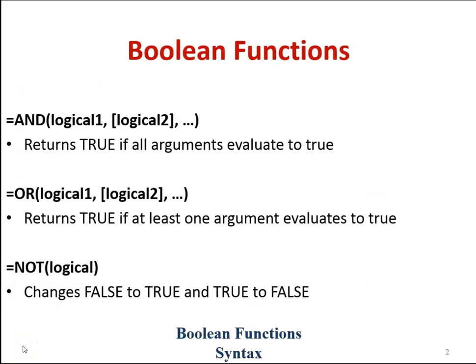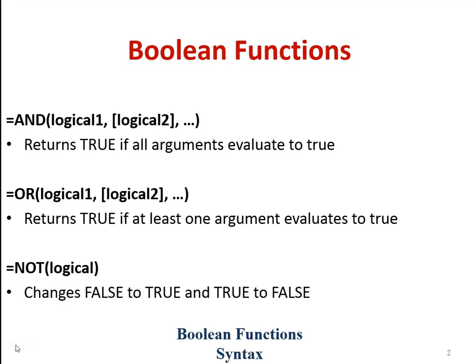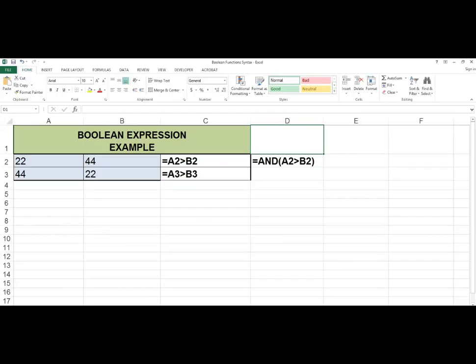Boolean functions also display or return the boolean value true or false. In this class we will learn the AND boolean function, the OR boolean function, and the NOT boolean function. The AND function returns a true boolean value if all arguments evaluate to true. Syntax: equals AND, logical one, comma, logical two, comma, ellipsis. The logical two argument is not required; however, if you only have one argument in the AND function you should use a relational expression.